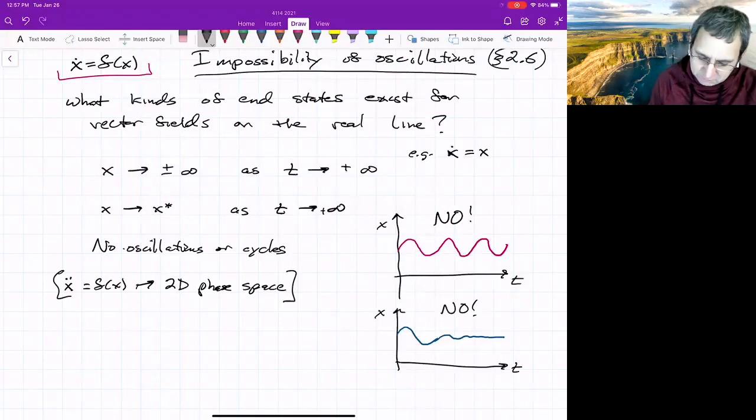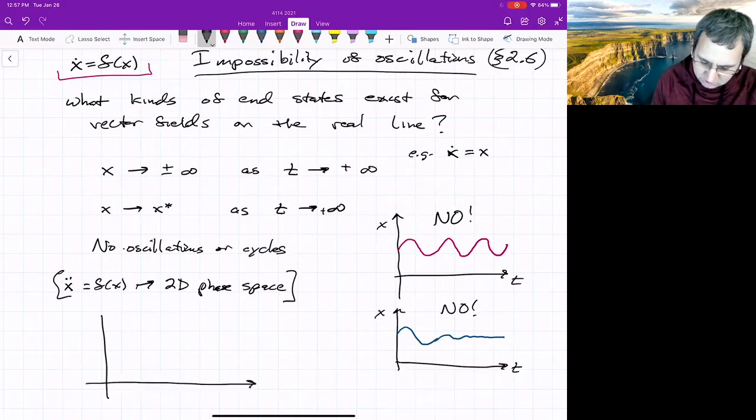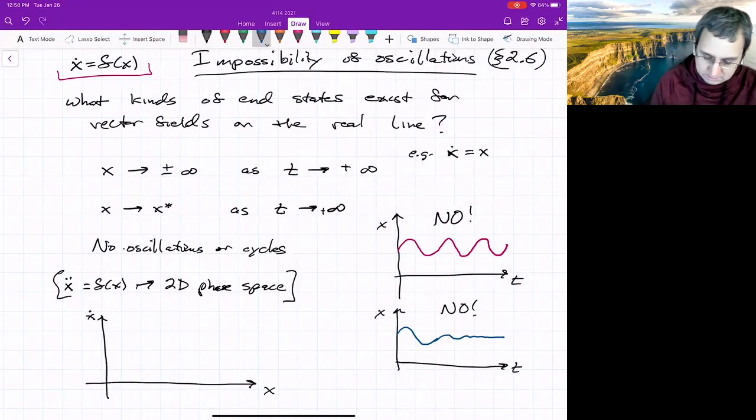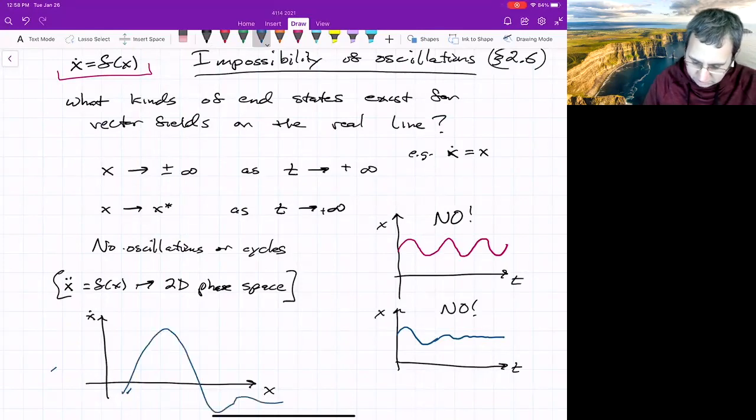How can you convince yourself that things only go to infinity or a fixed point? I think one way to do it is you just sort of plot your favorite curve for x dot or any curve you can imagine that is smooth. You've got any curve you can draw, something like that.